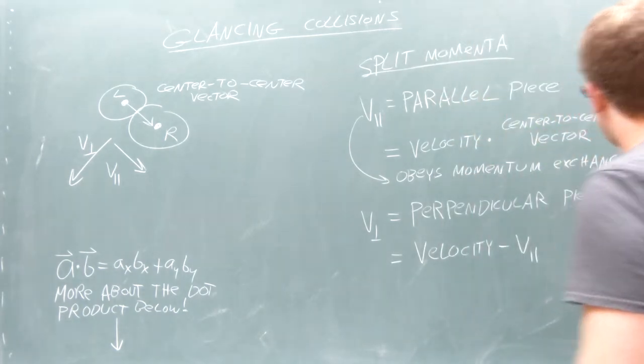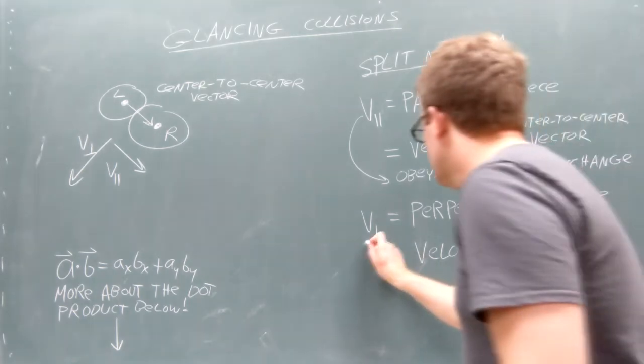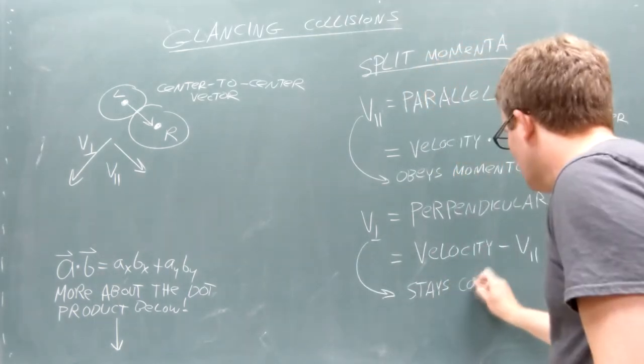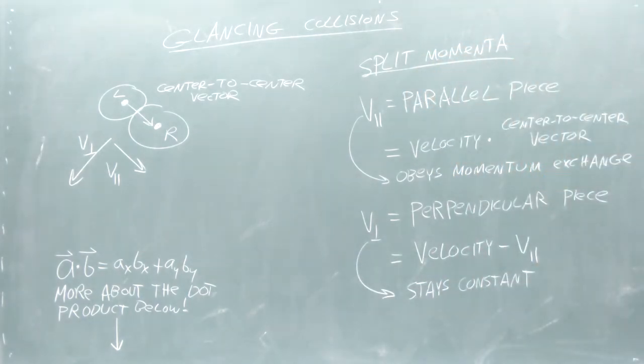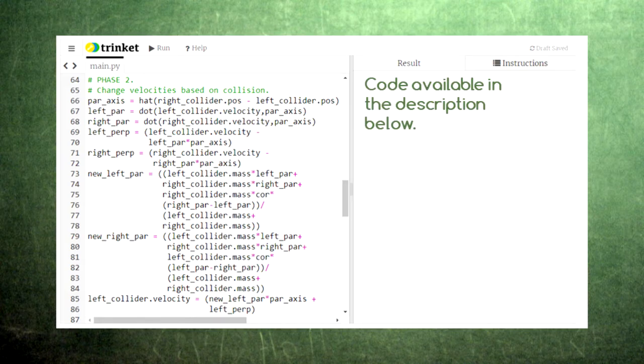The reason we need to separate the velocity vectors into parallel and perpendicular pieces is because the parallel pieces will obey the momentum exchange formulas that we used previously, while the perpendicular pieces will remain the same. Returning to our code from the previous episode, the only thing we need to change is phase two.